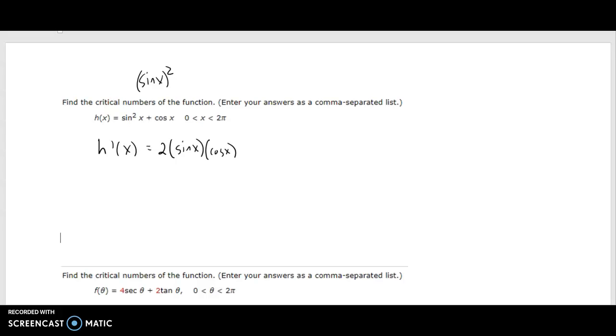The derivative of sine squared x is 2 sine x cosine x. Derivative of cosine is the negative sine.